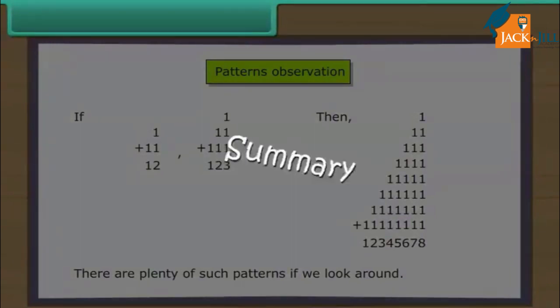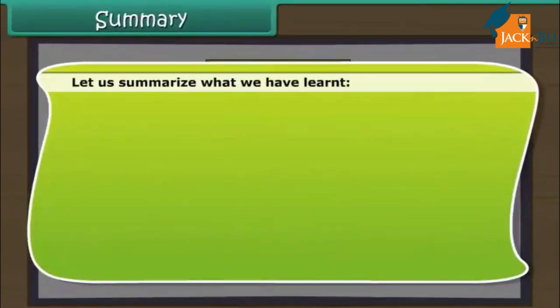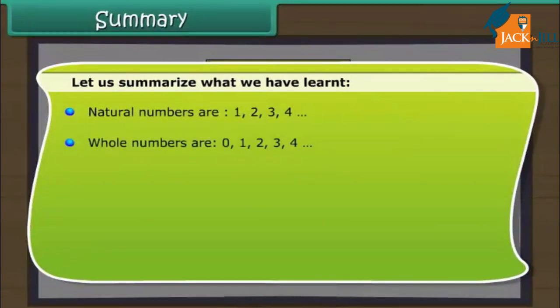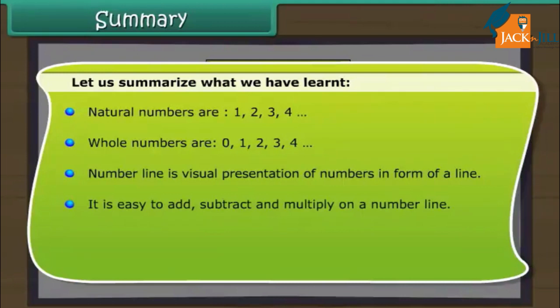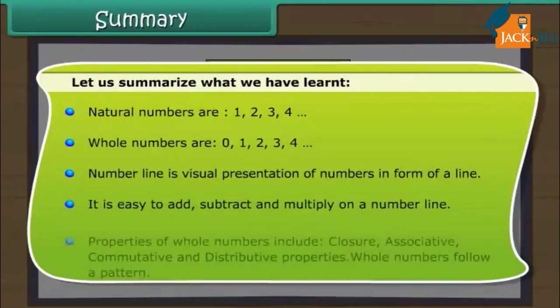Summary. Let us summarize what we have learnt. Natural numbers are 1, 2, 3, 4. Whole numbers are 0, 1, 2, 3, 4. Number line is visual presentation of numbers in form of a line. It is easy to add, subtract and multiply on a number line. Properties of whole numbers include closure, associative, commutative and distributive properties. Whole numbers follow a pattern.